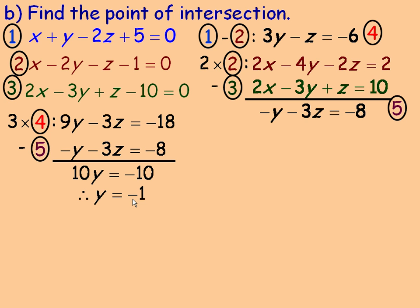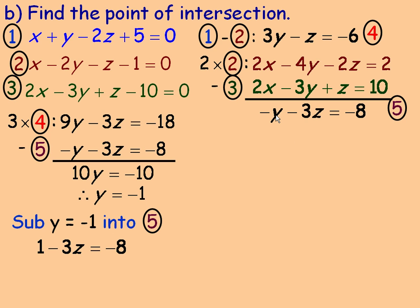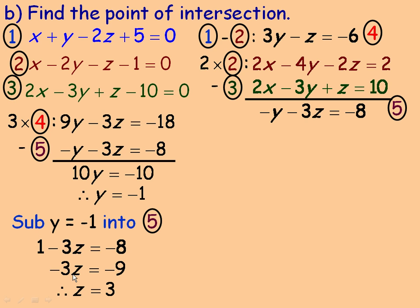Now that we know y = -1, we substitute into equation 5 to find z. Substituting: -(-1) - 3z = -8, so 1 - 3z = -8. Subtracting 1 from both sides: -3z = -9. Dividing by -3 gives z = 3. So the point of intersection has y = -1 and z = 3.